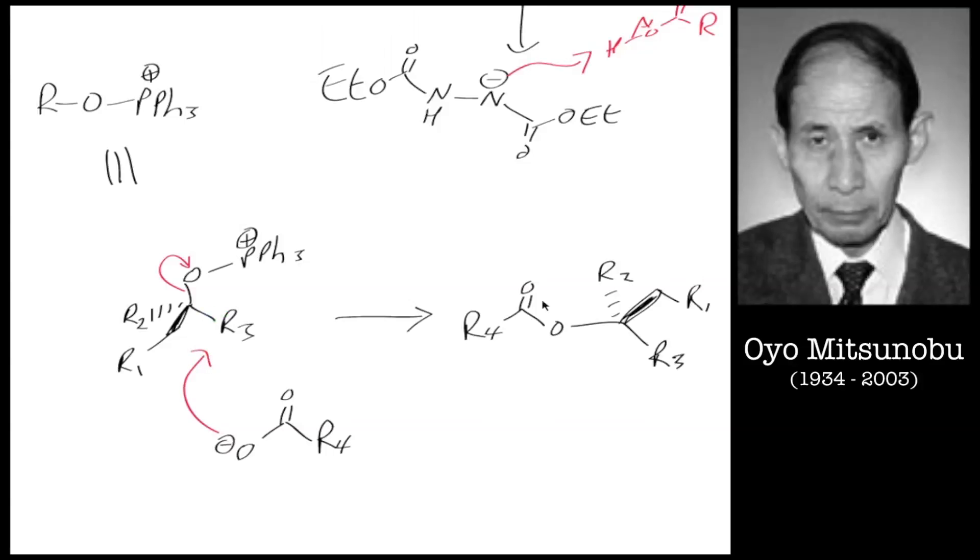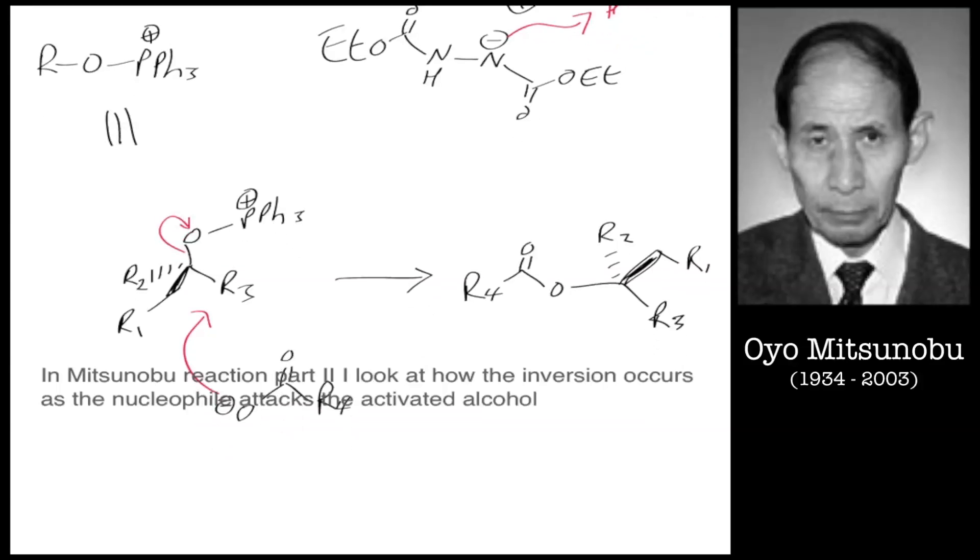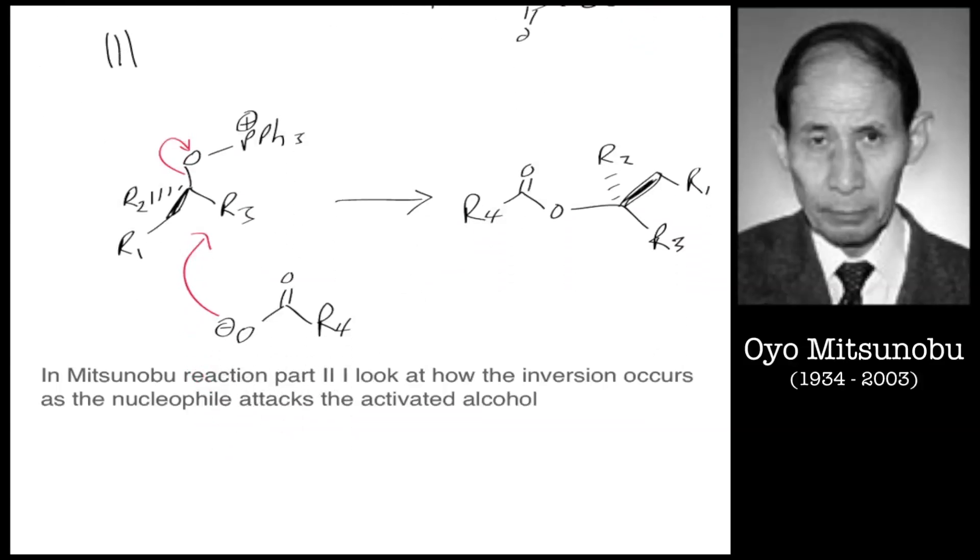That has inverted that center. So that's the Mitsunobu reaction. We can cleave that off. You can use the Mitsunobu reaction to invert a hydroxy group. That's superb for synthesis, especially if you've got the wrong enantiomer or diastereomer. You can invert it there, and you do see that sometimes in literature.